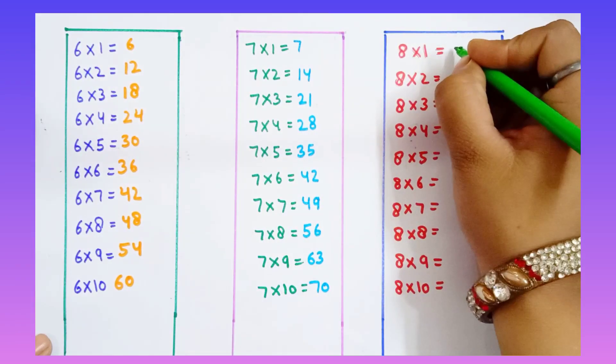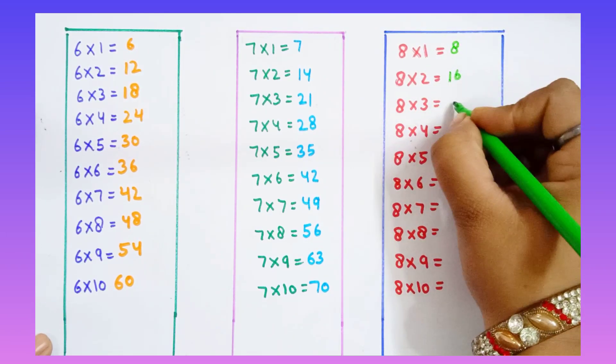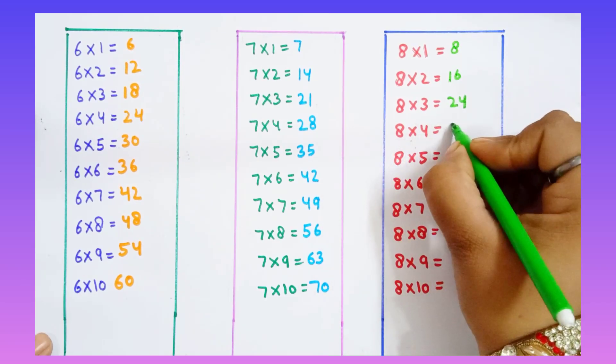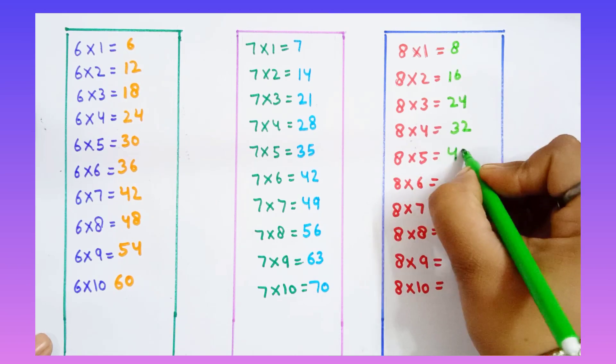8 ones are 8. 8 twos are 16. 8 threes are 24. 8 fours are 32. 8 fives are 40.